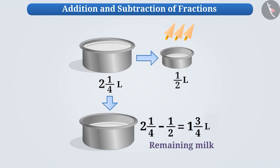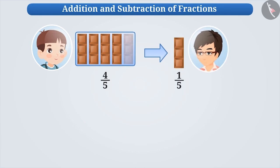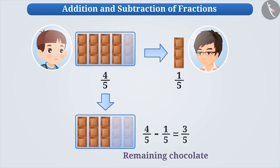Similarly, if you have four by five parts of a chocolate, out of which one by five parts is given to your friend, then the remaining chocolate will be three by five parts of the chocolate.